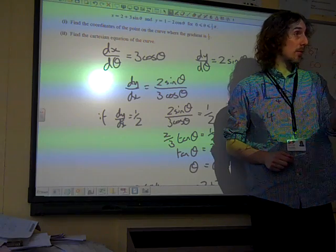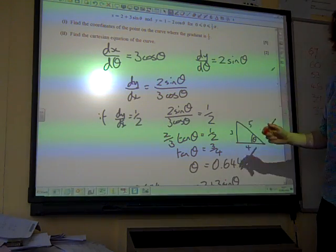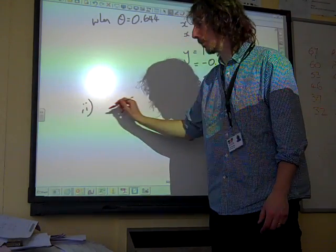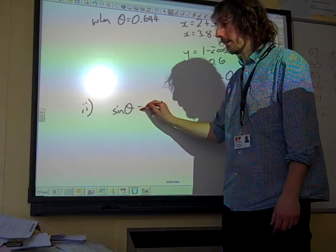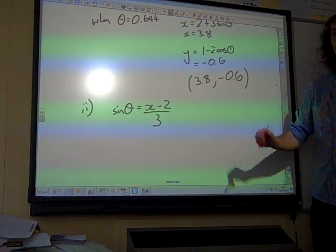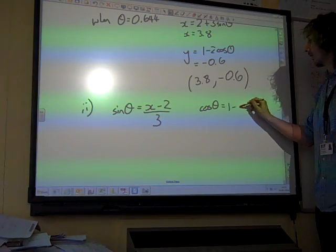If we're going to do that, we need to rearrange it first to get sine theta equals and cos theta equals, and then we can square it. So the x equation, if we rearrange the x equation, it says sine theta is x minus 2 over 3. If we rearrange the y equation, it says cos theta is 1 minus y over 2.